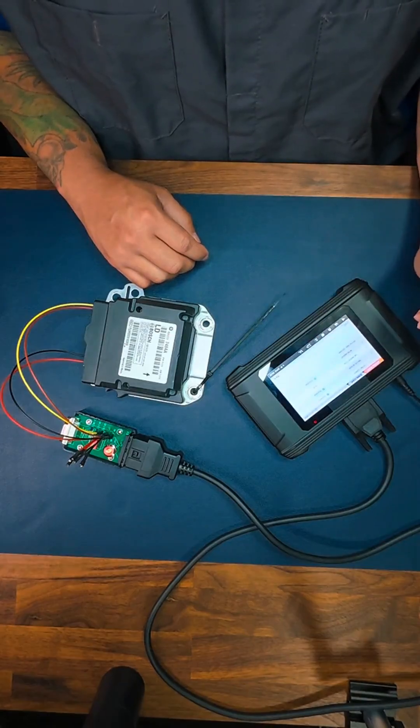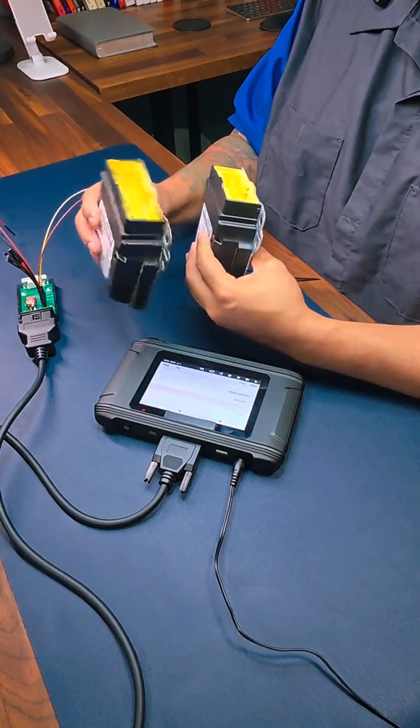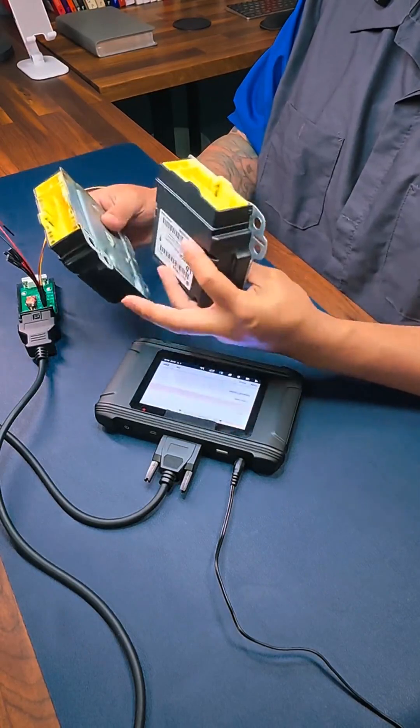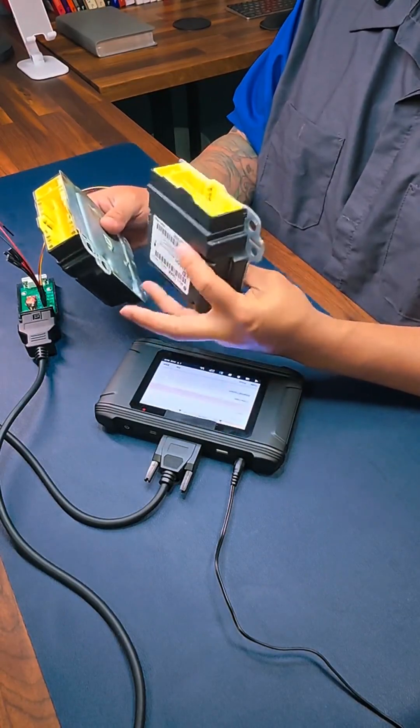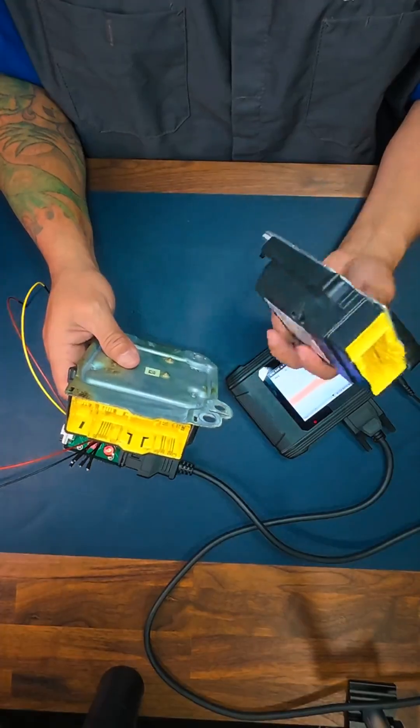And that's it, ladies and gentlemen. We used the data from the old module that didn't work, and we downloaded that data and transferred that data to the new module. And now this new module is programmed properly. Now we're going to get this module into the vehicle, and that's it. That airbag light is going to be gone.